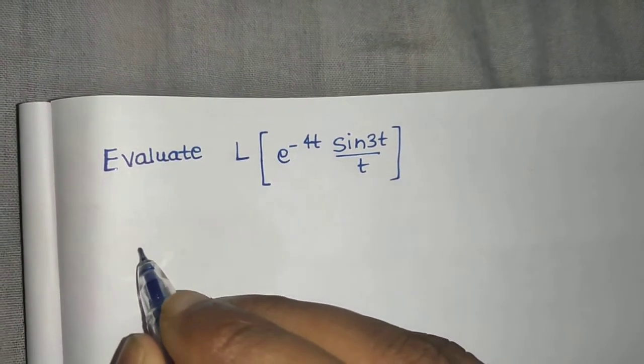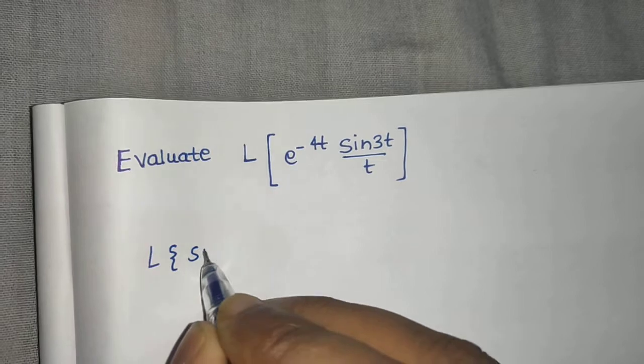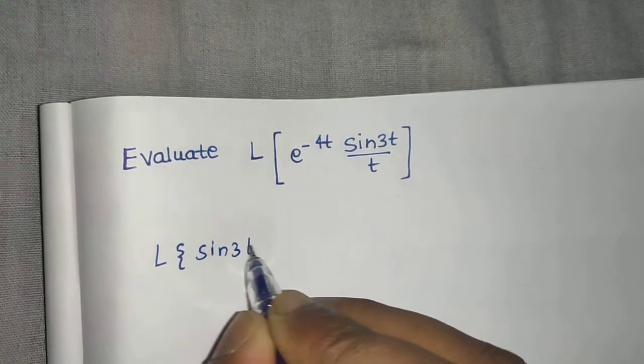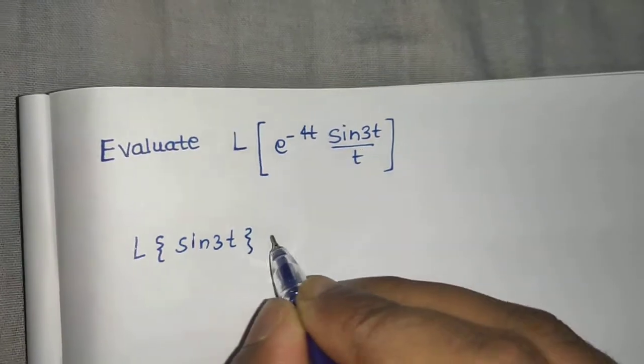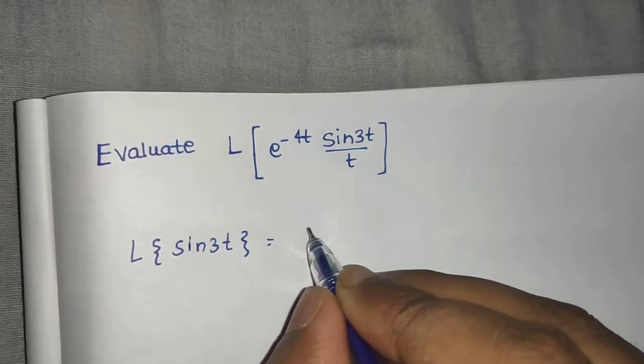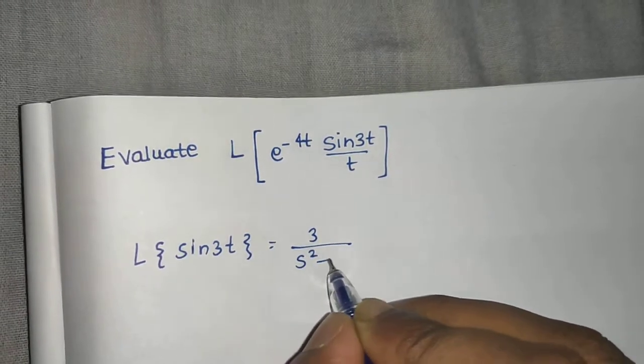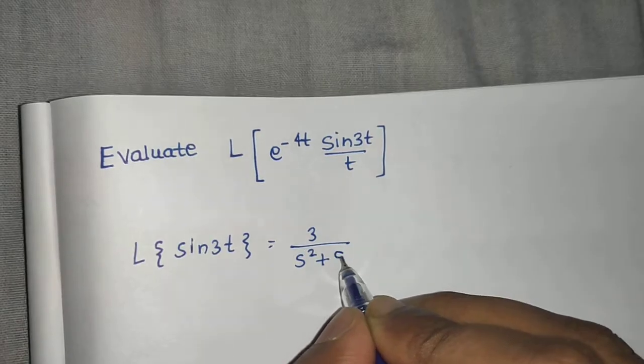So first of all Laplace of sine 3t. Laplace of sine at is a which is here 3 divided by s square plus a square. So 3 square is 9.